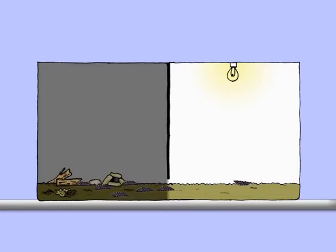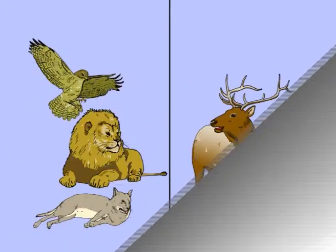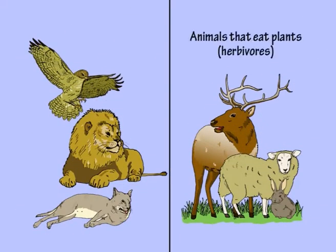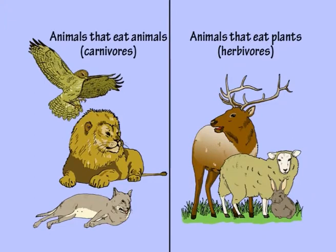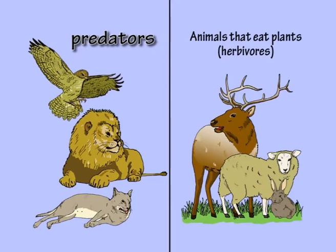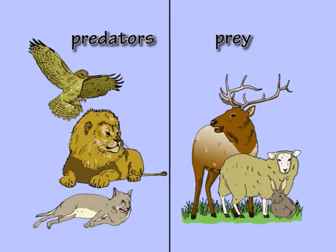Also, their instinct is to remain hidden to avoid being eaten. Some animals eat plants and some animals eat other animals. An animal that hunts and eats other animals is called a predator. The animal that is hunted and eaten is called its prey.